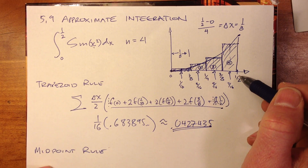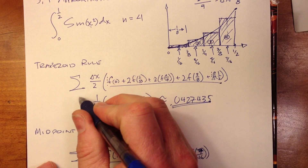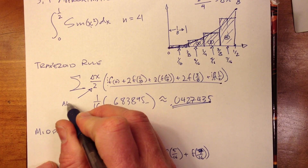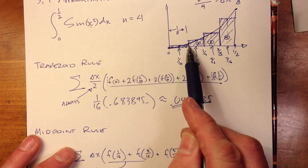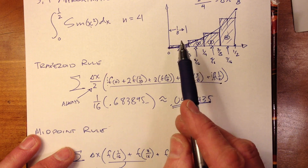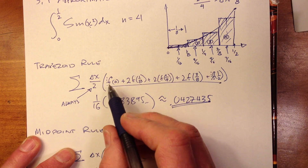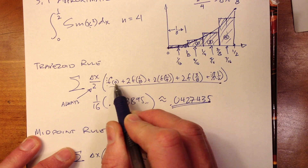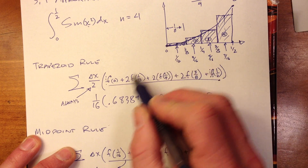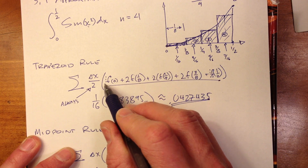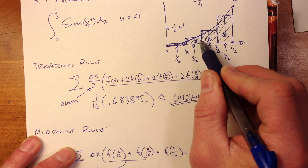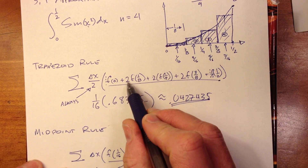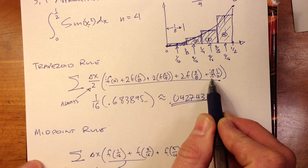The trapezoid rule has a simple pattern. The coefficients come from averaging the beginning and end bases — the parallel sides of a trapezoid. The first endpoint (lower bound a) has a coefficient of one, each interior function value gets a coefficient of two because they're the beginning and end of each trapezoid, and the final endpoint also has a coefficient of one.